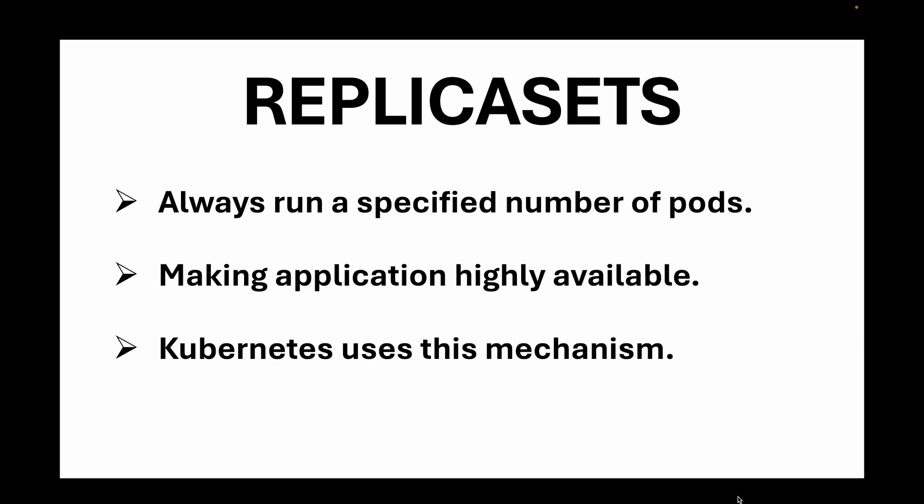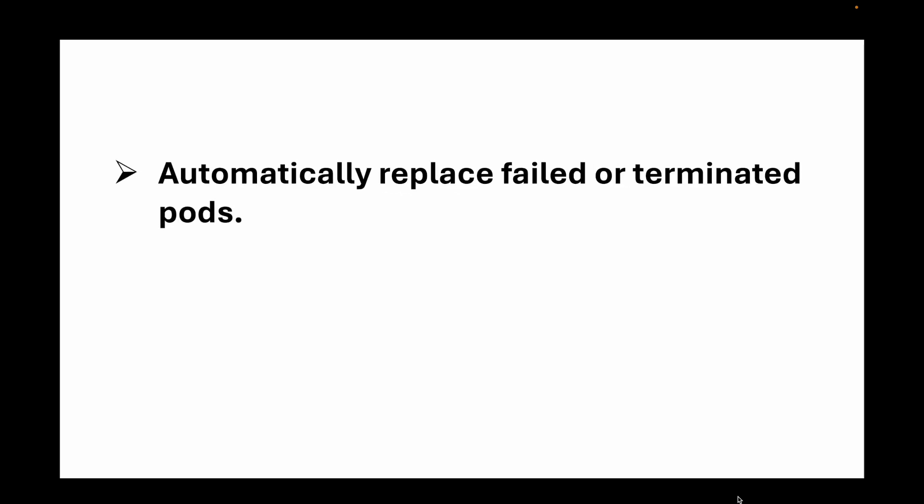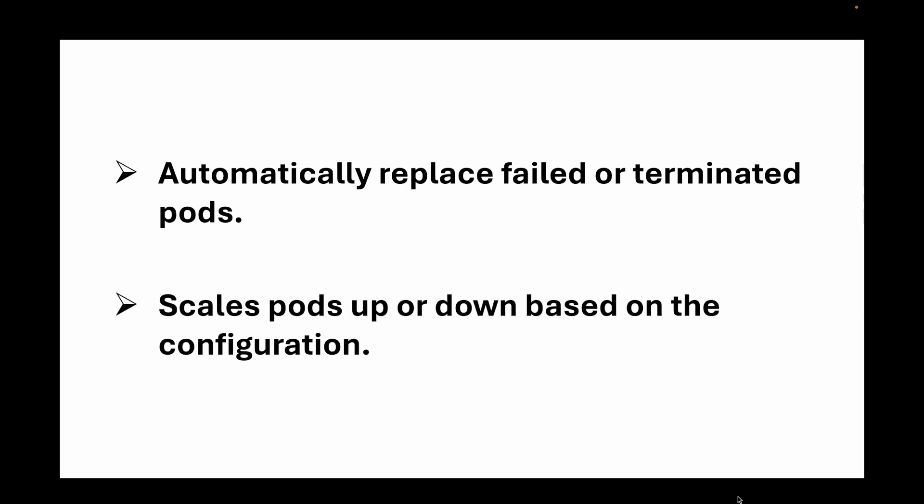Some key features of replica sets: first, it automatically replaces any failed or terminated pods. If a pod goes down for any reason, the replica set will create a new pod and ensure you always have the specified number running. Second, it scales pods up and down based on your configuration — whenever you update the configuration, replica sets will create or remove pods accordingly.